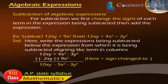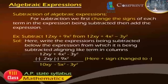Example: Subtract 12xy plus 9x² from 12xy plus 4x² minus 3y². Solution: Write the expression being subtracted below, aligning like terms in columns. 12xy plus 4x² minus 3y², minus 2xy minus 9x². Changing signs gives: minus 10xy minus 5x² minus 3y².